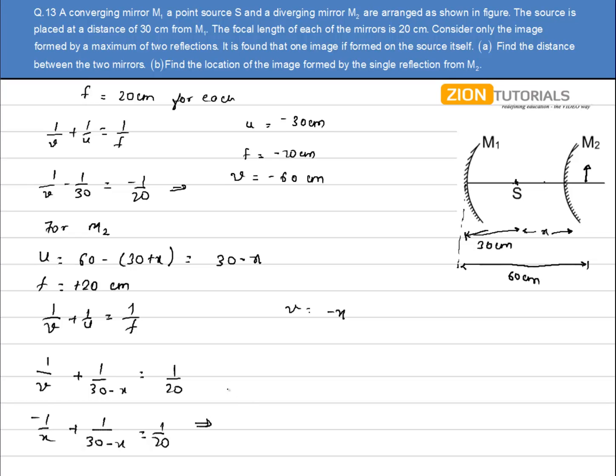So I get a quadratic equation: x² plus 10x minus 600 equals 0. So on solving this, I get the value of x as 20 cm and minus 30 cm.